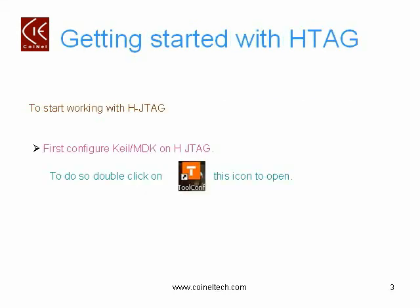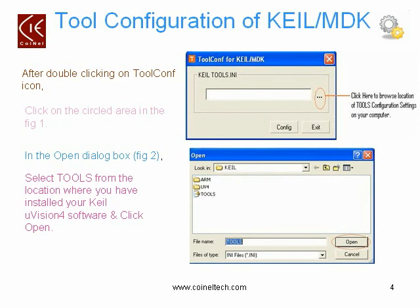Now let's see how to get started with Edge JTAG. To start working with Edge JTAG, first you need to configure Keil or MDK on Edge JTAG. To do so, double-click on the icon shown in this slide. When you double-click on this icon, the two configurations for Keil or MDK dialog box appears as shown in the first figure. Click on the encircled area of the first figure, which opens up a dialog box called Open, showing the stored location of your Keil Microvision 4 IDE.